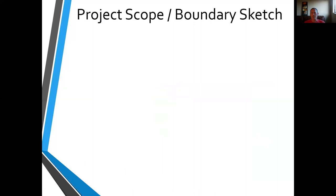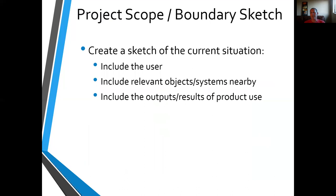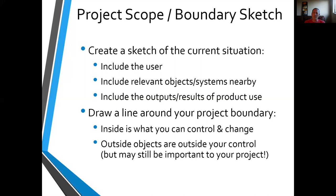So how do we capture this in a visual fashion? That's something we call a boundary sketch. To create a boundary sketch, you create a drawing of the current situation showing the user, how they interact with the current objects, and what's the input and output of the system or process. Then you draw a line around the portion you're allowing yourself to change — that establishes the scope of your control. Objects outside that line should be on the sketch if they influence the project, but outside the line, identifying that you're not in control of those — you have to work within their limitations.